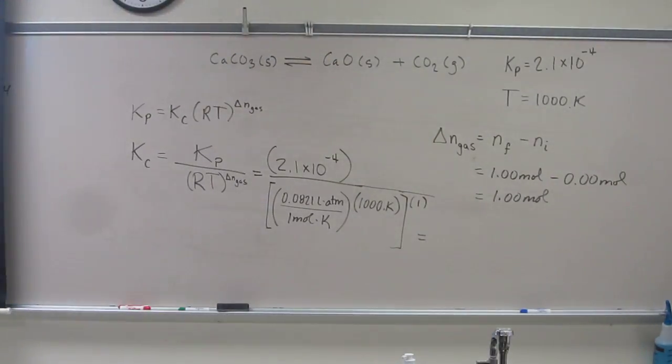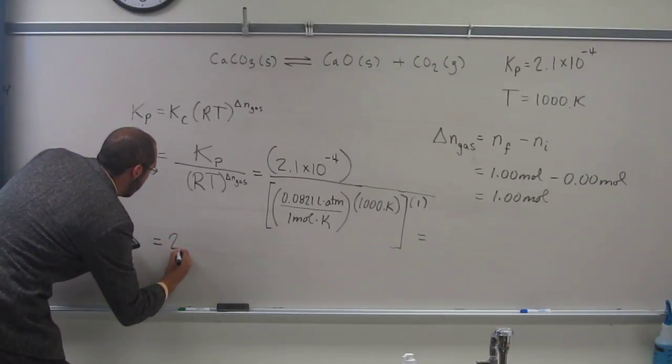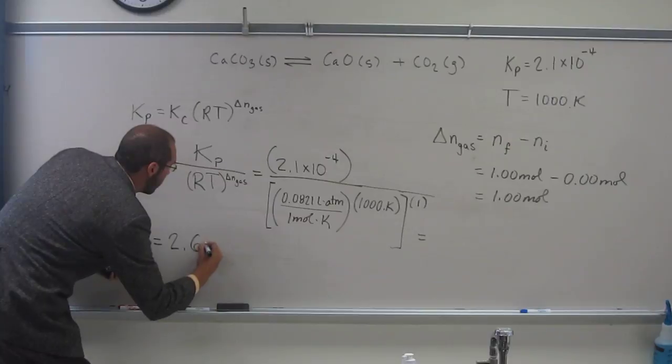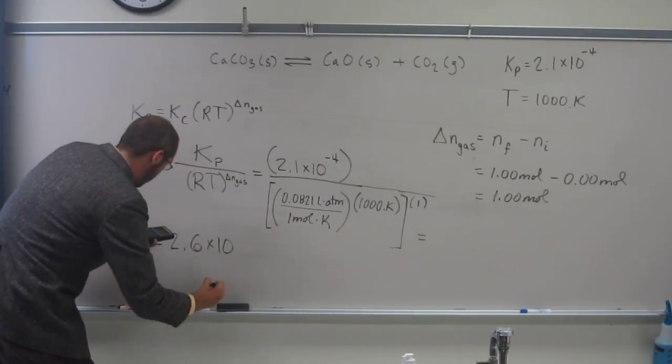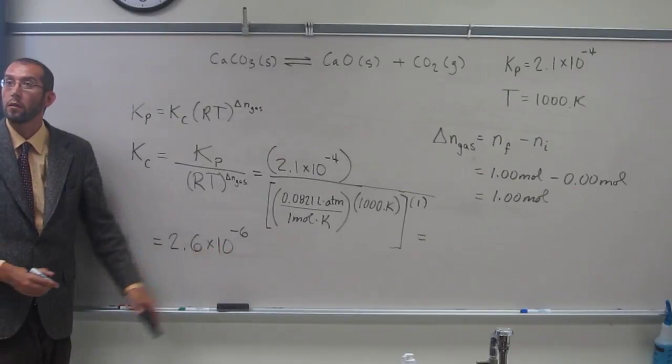So this should go to two sig figs, so I get 2.6 times 10 to the negative 6, no units.